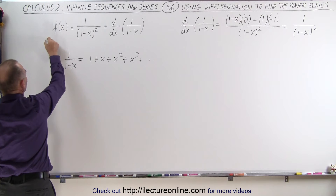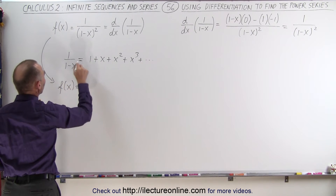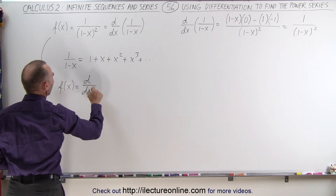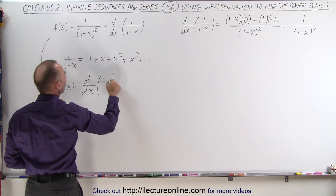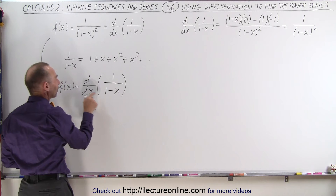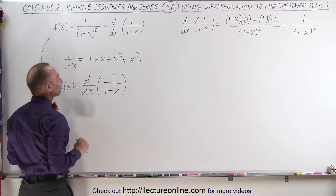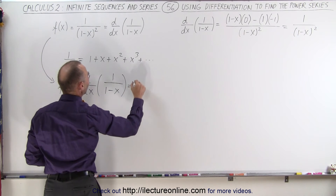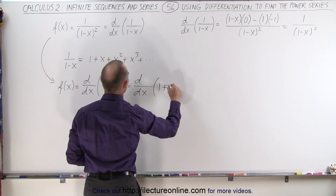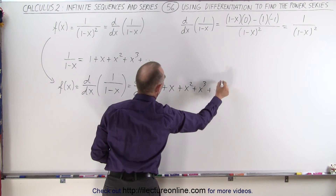Which means that the function we're trying to define as a power series, f of x, can be written as d/dx of 1 over 1 minus x. Since the derivative of 1 over 1 minus x equals our original function, the derivative of the power series 1 plus x plus x squared plus x cubed plus so forth will give us f of x as a power series.